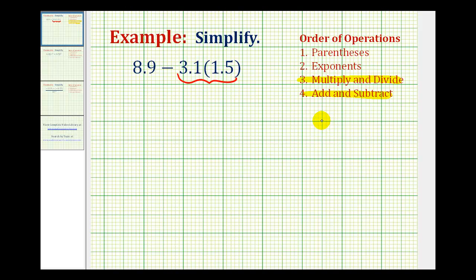So we have 3.1 times 1.5. Notice this first decimal has one decimal place and so does the second. And therefore the product must have 1 plus 1 or 2 decimal places. So knowing this, we'll go ahead and multiply and then place the decimal in the correct position.